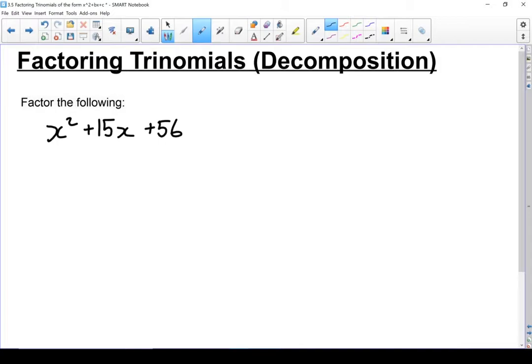Let's look at factoring trinomials using decomposition. Our first step here is we're going to look at this last term, this 56. We're looking for a pair of factors that multiply together to give 56, but add or subtract to give 15. You're going to recognize this from the box method. This step is exactly the same.